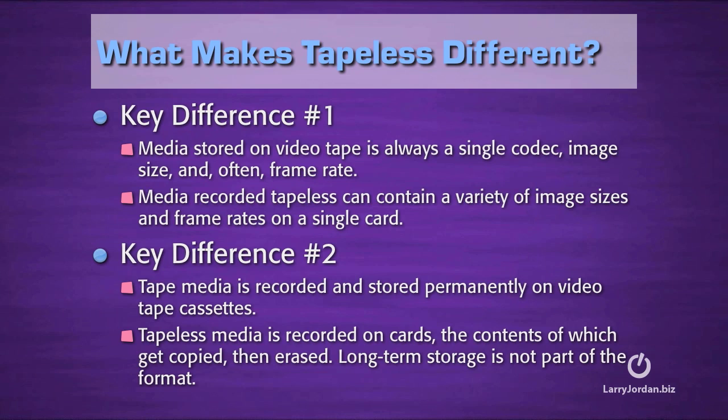What makes tapeless different from tape media? There are really two key differences. First, media stored on videotape is always a single codec, a single image size, and often a single frame rate. Where media recorded tapeless can contain a variety of image sizes, a variety of frame rates, and by a simple change of a menu option on the camera can often change the codecs. Final Cut can't work with different codecs, different frame rates, and different image sizes in the same timeline, so it has to treat tapeless media differently than tape.